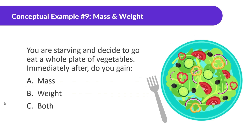You're starving and decide to eat a whole plate of vegetables. Afterward, do you gain A) mass, B) weight, or C) both? The answer is both. Mass is the amount of stuff that you have, so if you're consuming stuff, you're going to have more stuff inside of you — your mass increases. And when you have more mass on Earth or on a planet, you're also going to weigh more. So both your mass and weight will increase.